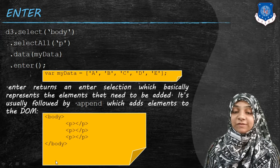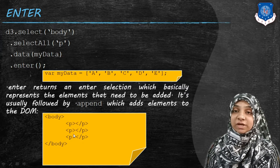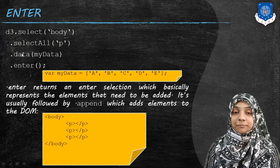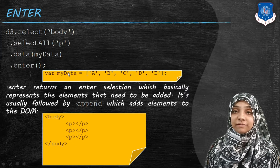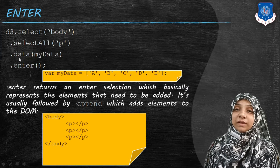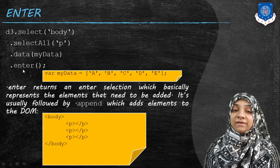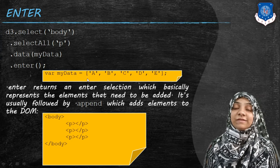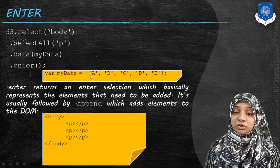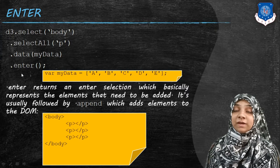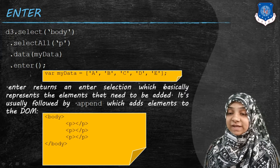To put it simply, we call the enter method after our data method. Say for example we have selected the body element, and inside it there are only three p tags which are still empty, and the variable myData contains five elements — each element is one letter. We are binding these p elements with the data variable. We select the body tag, select all p tags, and after selecting them we bind the array myData with this selection using the data method. After the data method we write the enter method, because we have only three p elements but five items in the array. To display each character within each paragraph, we would need five paragraphs, that's why we make use of enter.